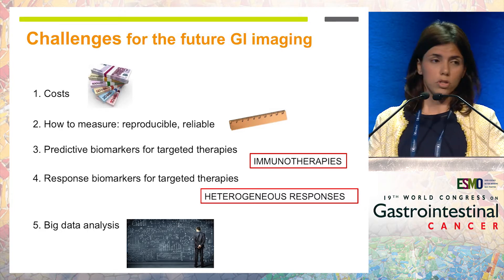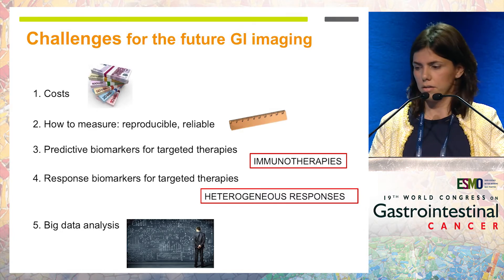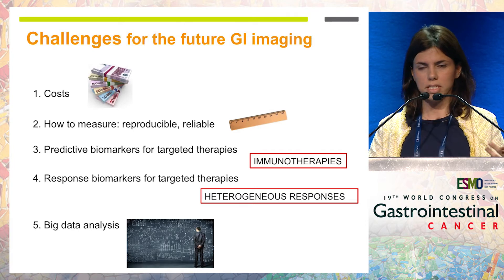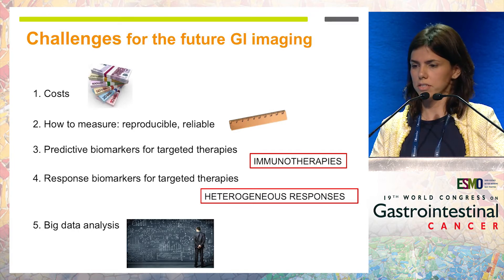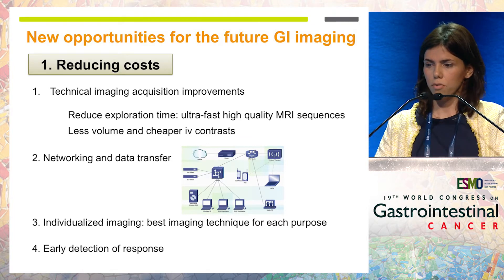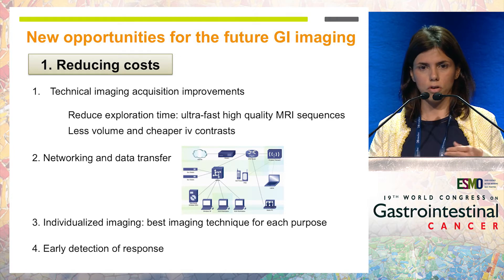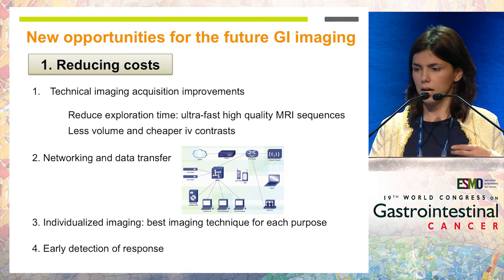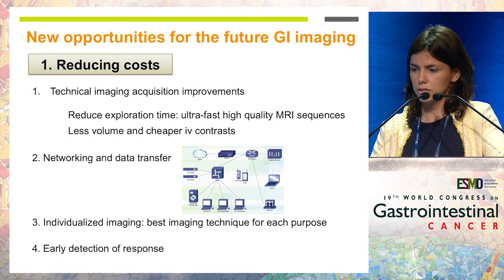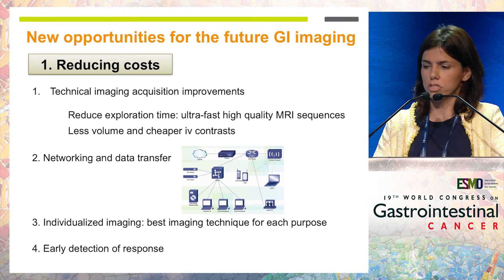All these tools are going to give us huge information about the tumor, and we will need to deal with all this big data. But where some people see challenges, I see new opportunities. We have worked hard in developing new technical improvements to reduce the cost of those scans — for example, reducing scanning time. We are now able to perform high-quality ultra-fast MRI images. Or, for example, we can give less volume of intravenous contrast, which will necessarily reduce the cost of the scans.